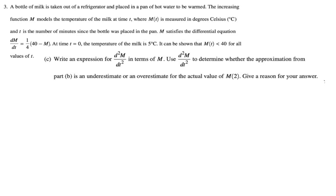Write an expression for the second derivative in terms of m. Use the second derivative to determine whether the approximation from part b is an under or overestimate for the actual value of m of 2. Give a reason. All right. We've got to find the second derivative. So second derivative, or rather, the first derivative before we take the second derivative, just so it's written down.